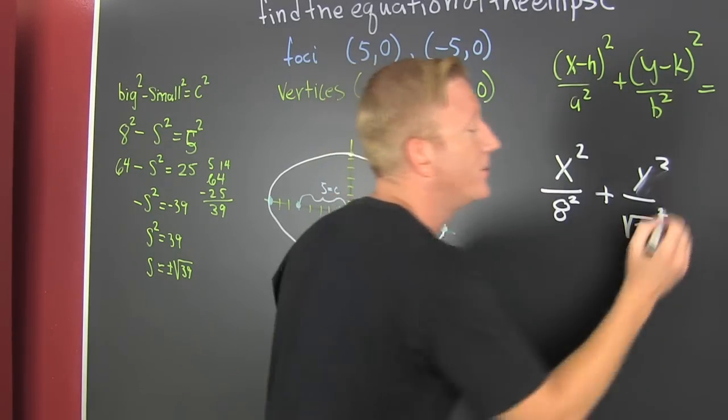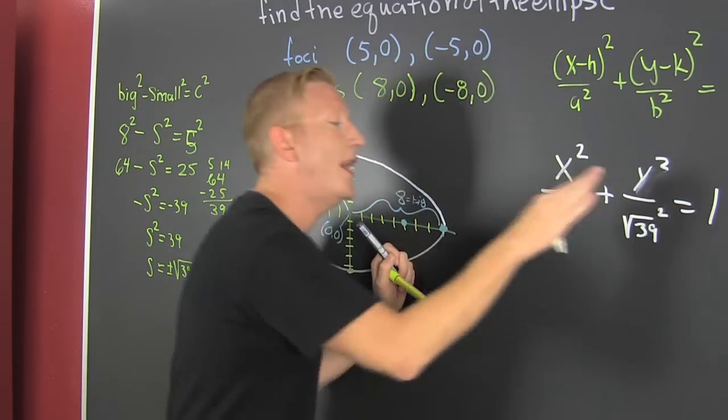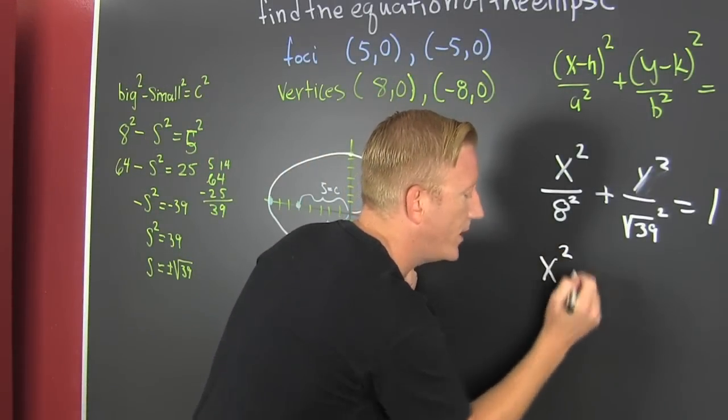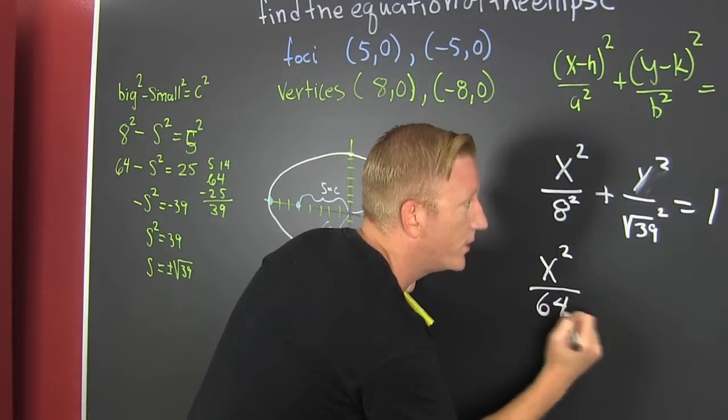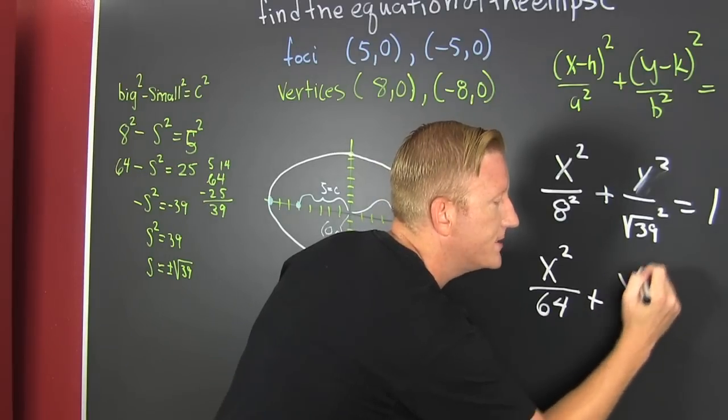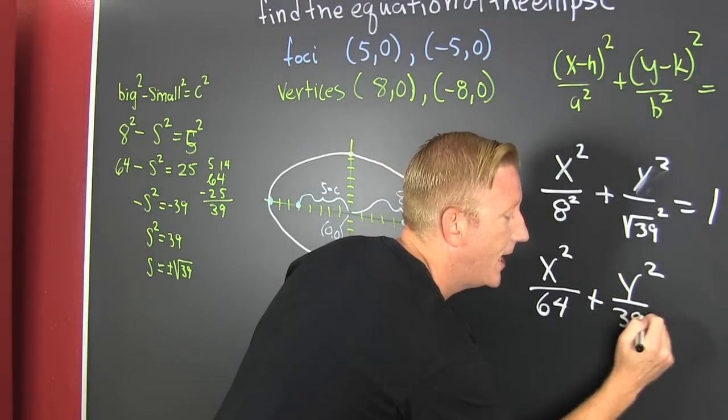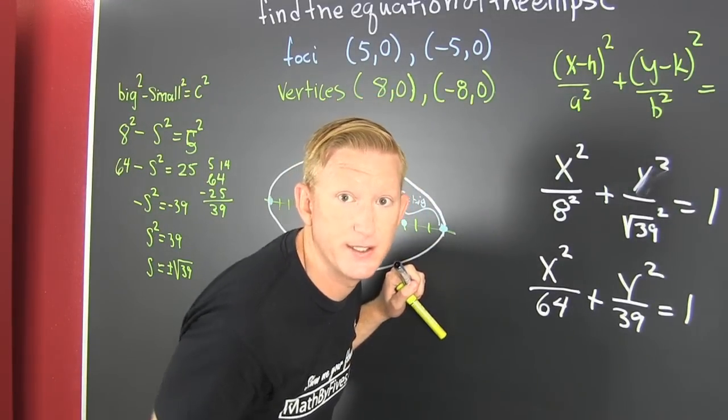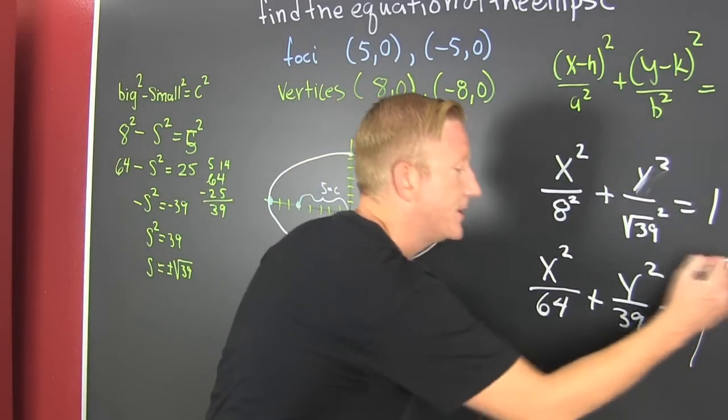Maybe we should check that. I don't know, though. But then we set it equal to 1 because that's the general form. Let's clean it up. That's X squared over 64 plus Y squared over 39, and that's equal to 1. Fun. And we just found the equation with those characteristics. Yeah!